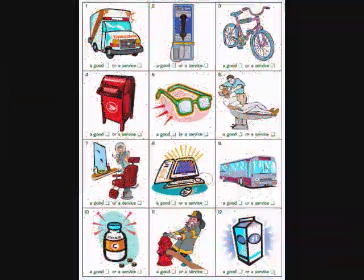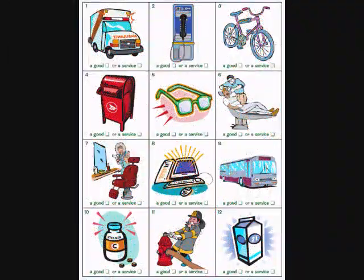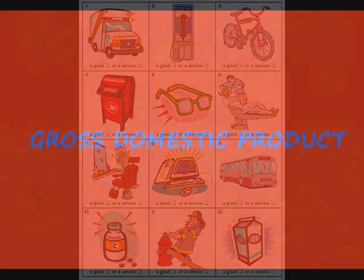The GDP report measures the output of goods and services produced by labor and property located in the United States. In other words, it measures the total economic production of the economy.